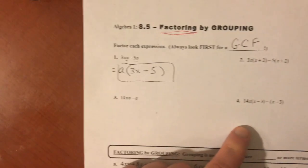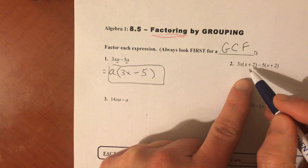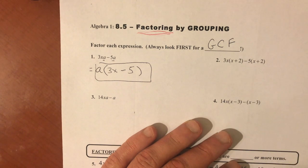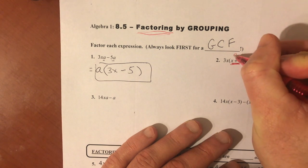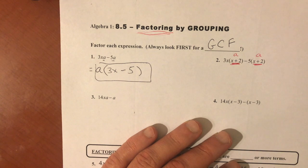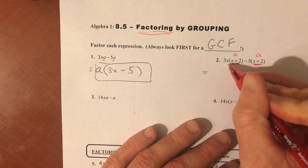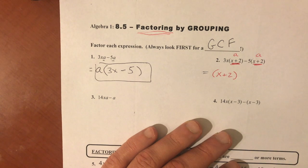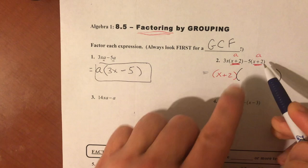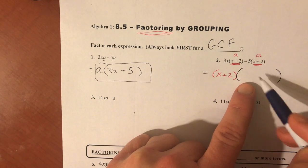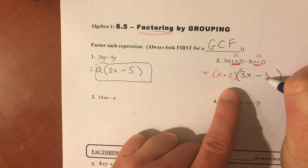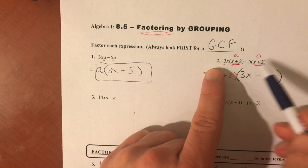Easy, right? Look at this one and see if you can see what it has in common with the previous one. It looks a little different because it's got parentheses, but instead of 'a' like in the last problem, it's got (x + 2) — that whole set of parentheses. We're going to treat it the same way: there's a common factor of (x + 2) that each of these terms has, so I can take out that (x + 2). After I take it out, I make a new set of parentheses and what's left is 3x minus 5.